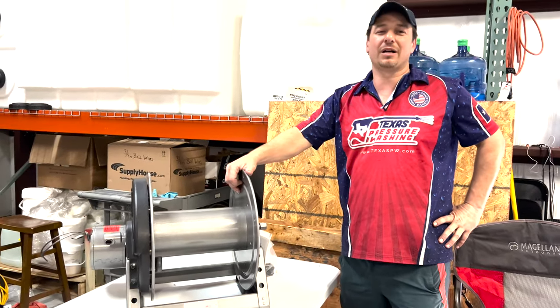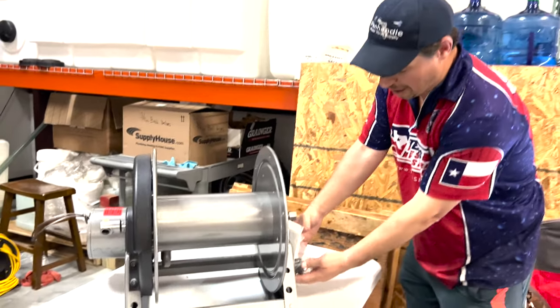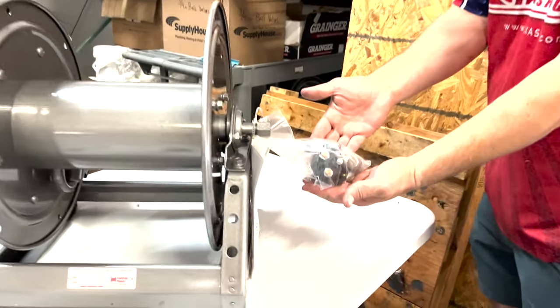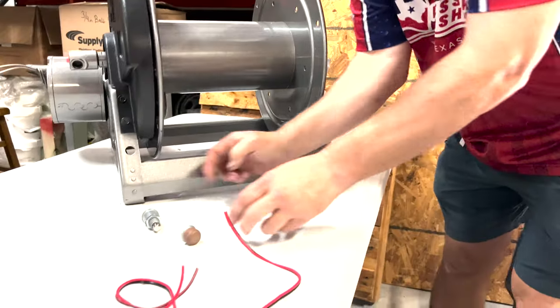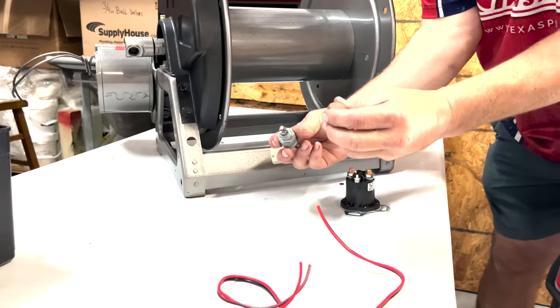When you buy your electric Hene Reels, they'll come with a kit here with all your parts. We have one opened up right here. It comes with our solenoid, our switch, and our switch cover.